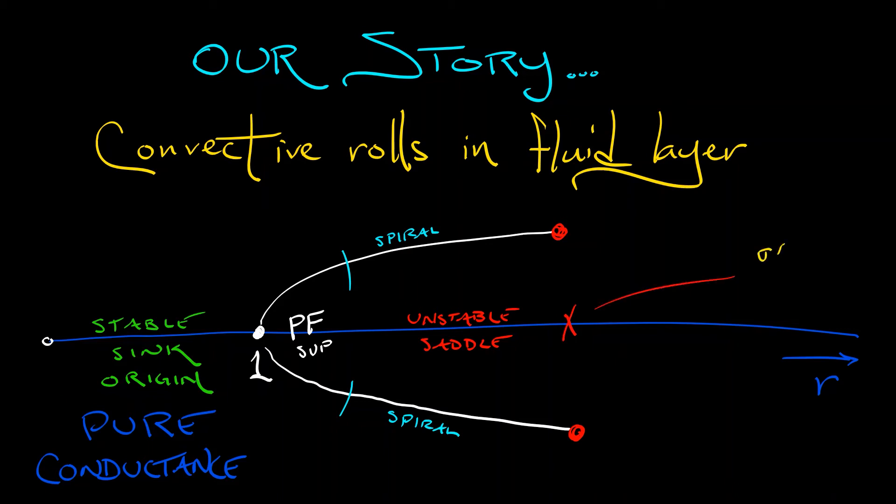But what we found is that there is a Hopf bifurcation at the value where r equals sigma times quantity sigma plus b plus 3, all divided by sigma minus b minus 1. And what that means is that this pair of equilibria in that two-dimensional complex eigenspace, what we have is a transition from a spiral sink to a spiral source.